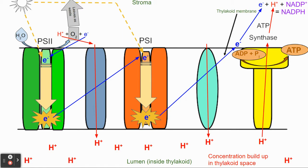NADPH and ATP are going to be the second part of the story of photosynthesis. This whole process of the light-dependent reaction is to create these two final products.